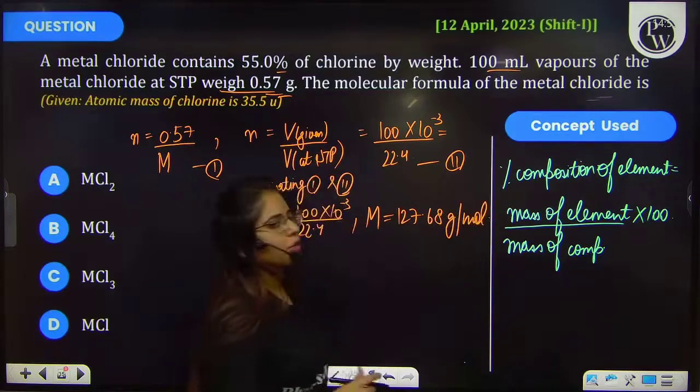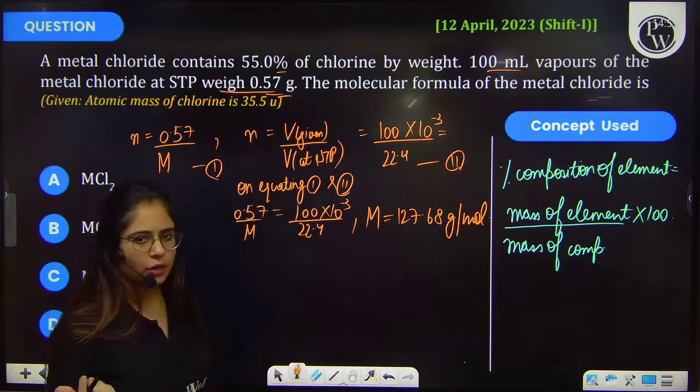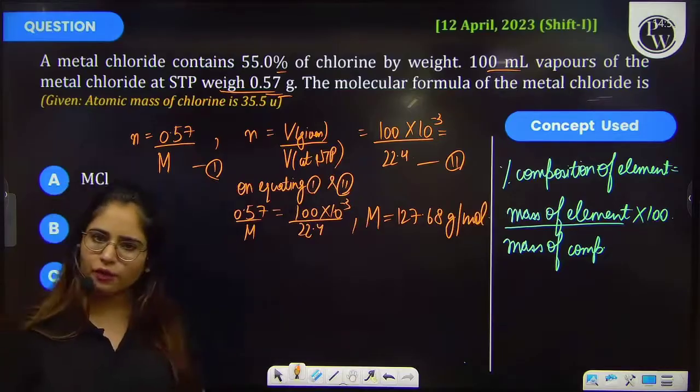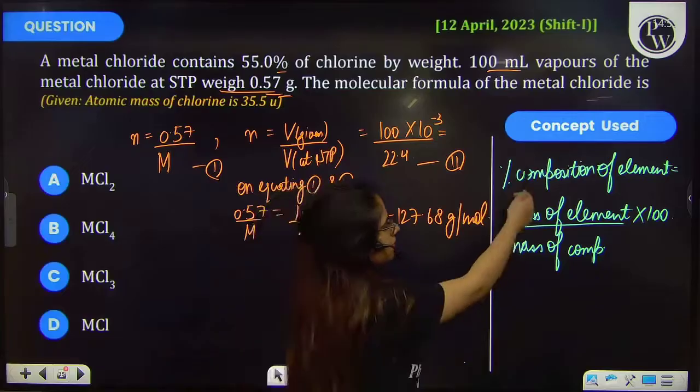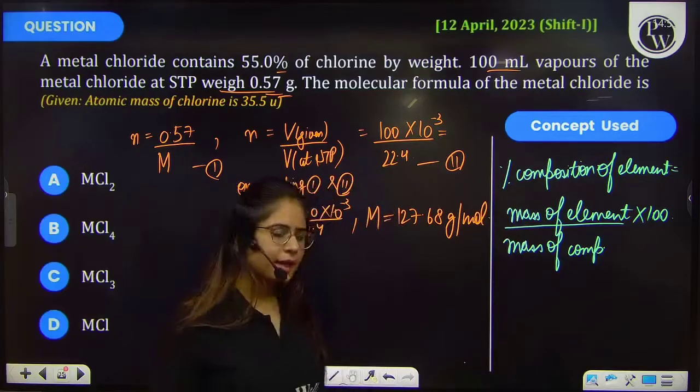Now this is the molecular weight of the metal chloride. But you have to tell the molecular formula. For that you have to use this concept, that means the percentage composition of the element present.